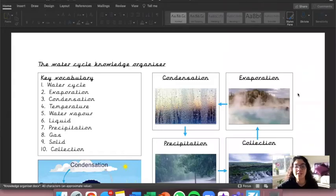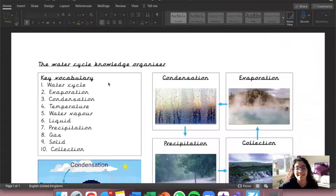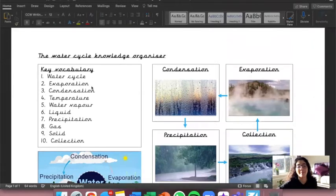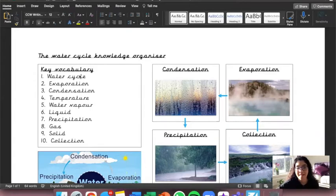So here is our knowledge organizer for the water cycle. We've got our key vocabulary on the left hand side which is what we are going to go through today. Now the key vocabulary words are water cycle, evaporation, condensation,